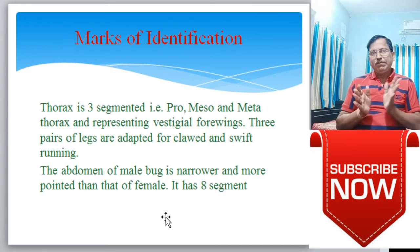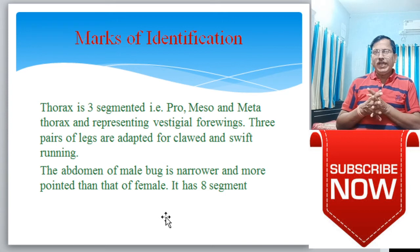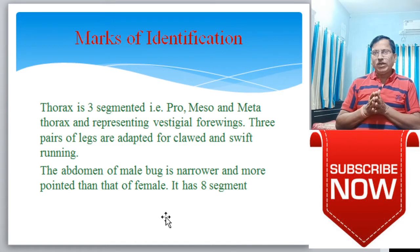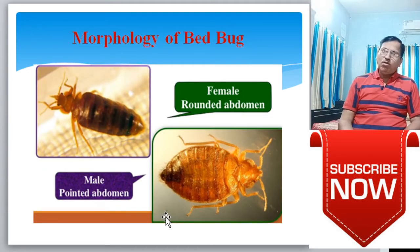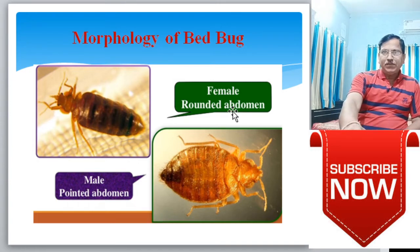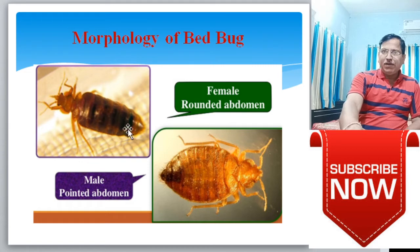The thorax is three-segmented: prothorax, mesothorax, and metathorax, with vestigial four wings. Three pairs of legs are adapted for clawing and rapid running. The abdomen of a male bug is narrower and more pointed than that of a female; it has eight segments. In female bed bugs the last abdomen segment is rounded, and in males the last abdomen segment is pointed - this is the distinguishing feature between male and female.